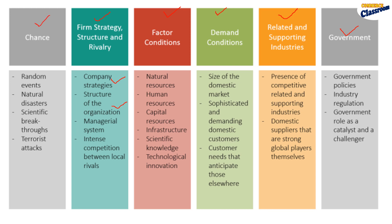Chance refers to random events such as natural disasters, scientific breakthroughs, and terrorist attacks. These are the elements of the Diamond Model, and competitive advantage is the outcome.